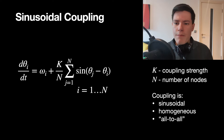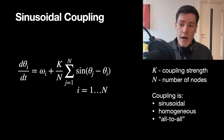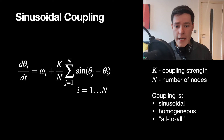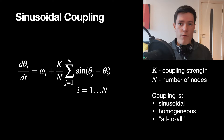The coupling we'll look at for the Kuramoto model is called sinusoidal coupling. The change of theta of node i over time equals the intrinsic frequency of that node i, plus a coupling term: K over N (coupling strength over number of nodes) times the sum of sine of theta j minus theta i over all j's. This coupling is sinusoidal, homogeneous because the coupling strength is the same for all nodes, and all-to-all because every node i has information from all other nodes j.